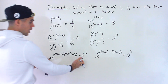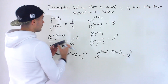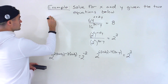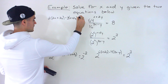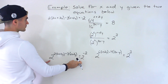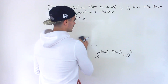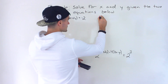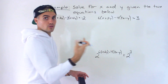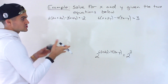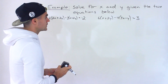Now we can drop the bases, because 2 to the power of one exponent equals 2 to the power of another exponent means the exponents must be equal. So our two linear equations are: 2·(2x + 3y) - 3·(x + 2y) = -2, and 6·(x + 2y) - 4·(3x - y) = 3. We now have two equations and two unknowns in a nicer format where we can use substitution or elimination.